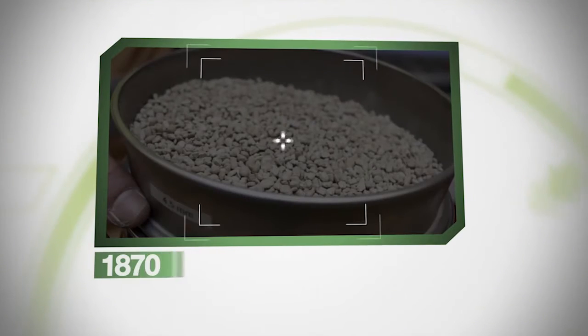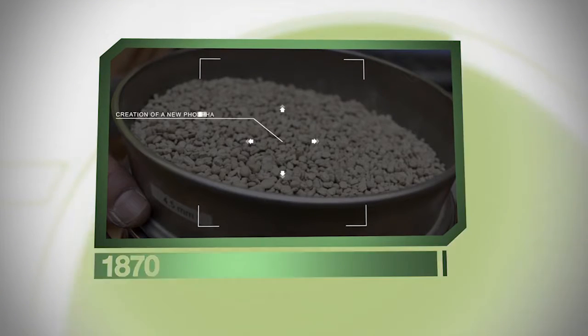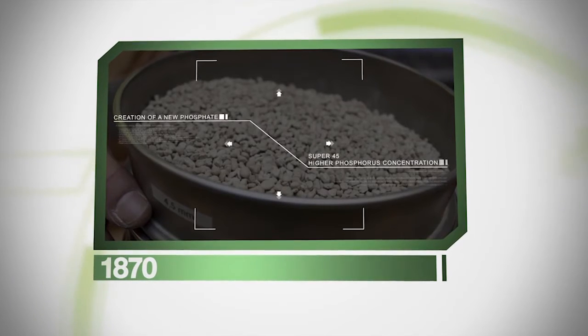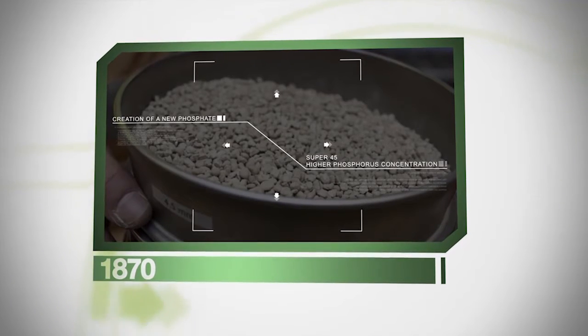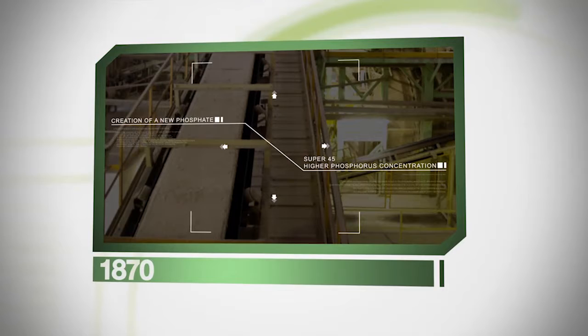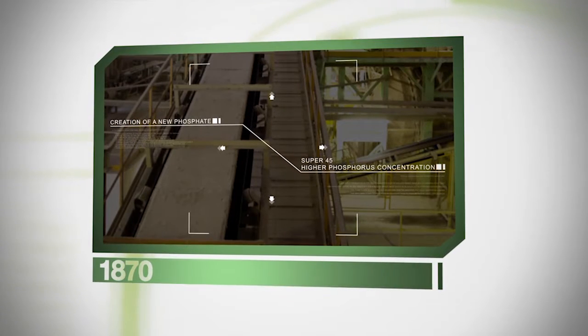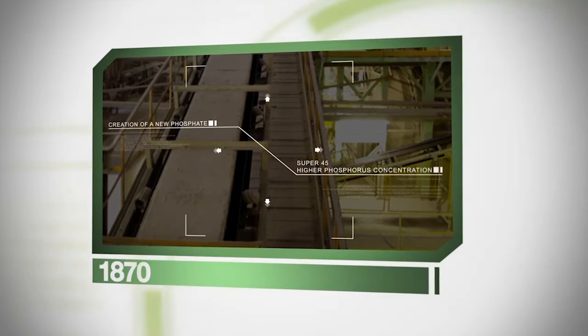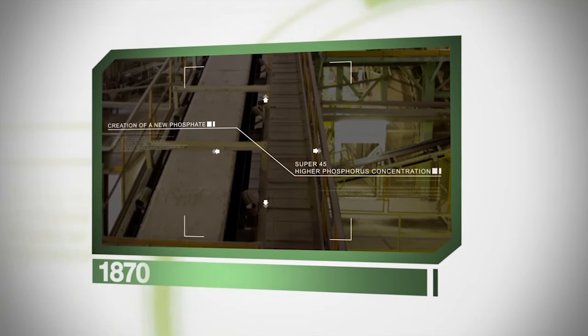The concentrated superphosphate, super45, resulting from a sulfuric acid attack on rock phosphate first took place in 1870. Since superphosphate was discovered more than 150 years ago, phosphorus as a raw material has not changed.